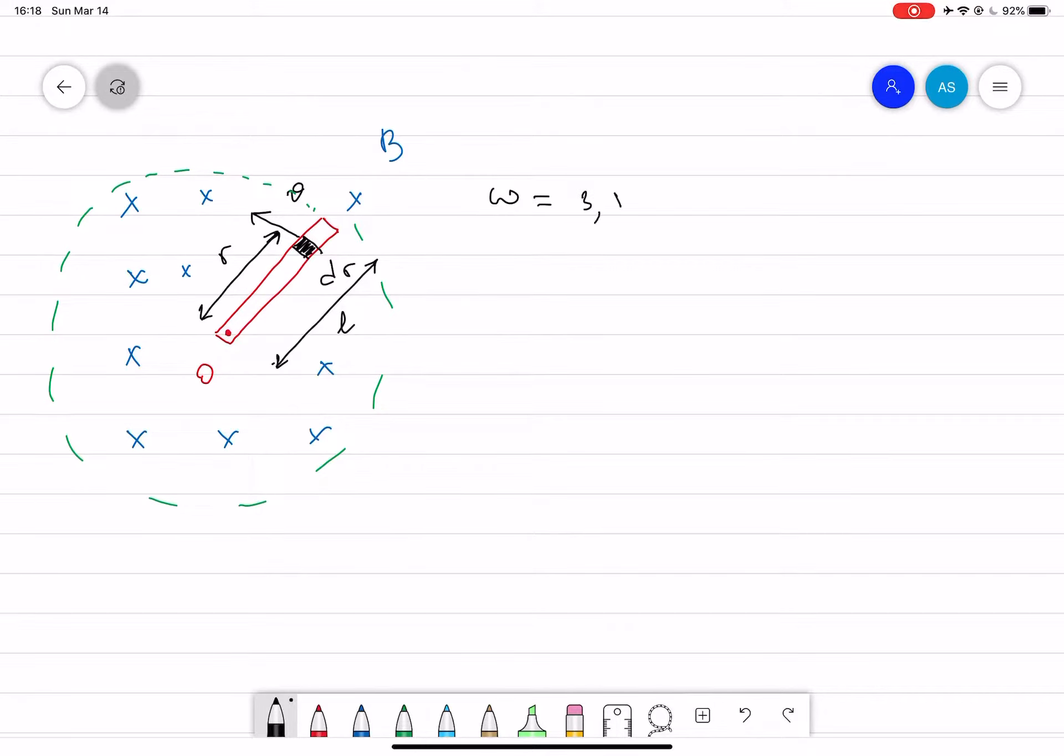Omega is 3.8 revolutions per second, so you have to convert it to radians per second, which means you multiply 3.8 by 2π and that will give you radians per second.